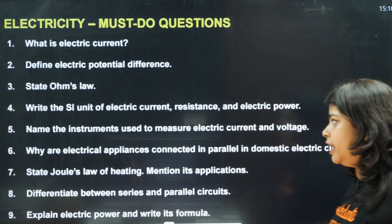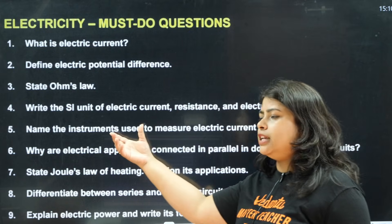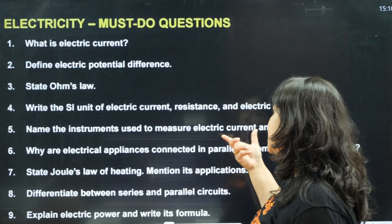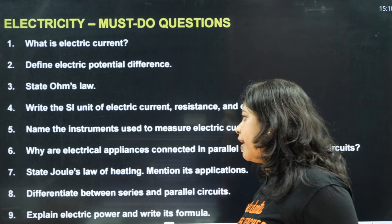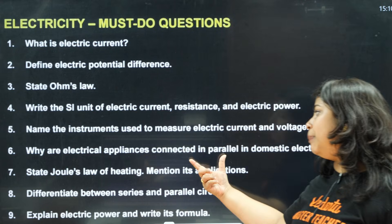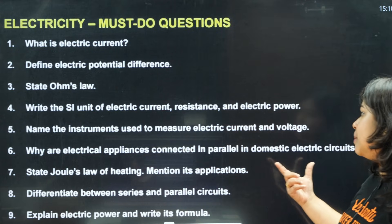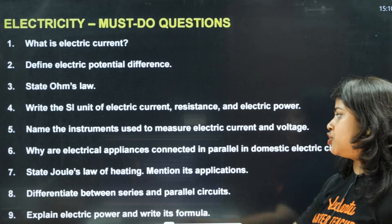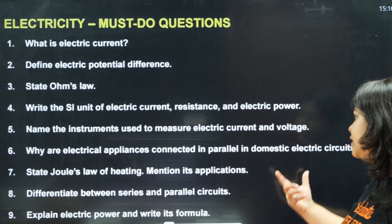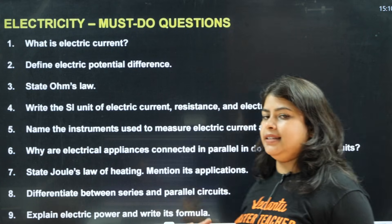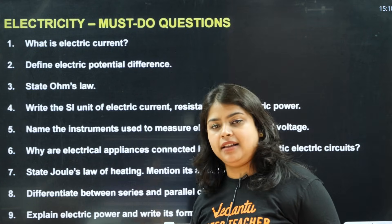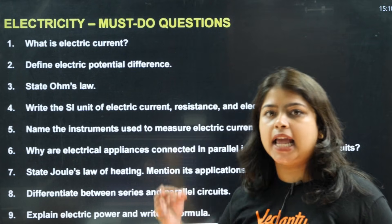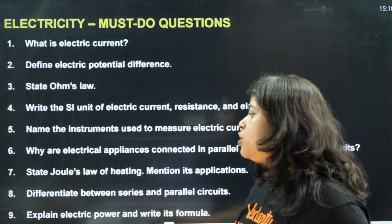Next: Name the instruments used to measure electrical current and voltage — this will be asked as a one-mark question. Next: Why are electrical appliances connected in parallel in domestic electrical circuits? You need to give a proper explanation for why they are connected in parallel rather than series.